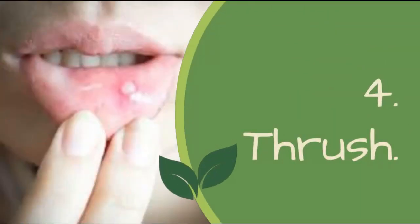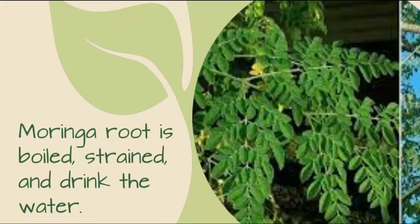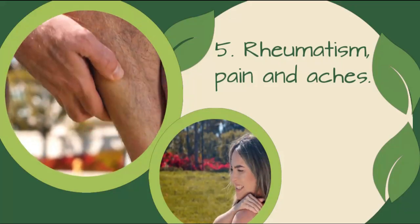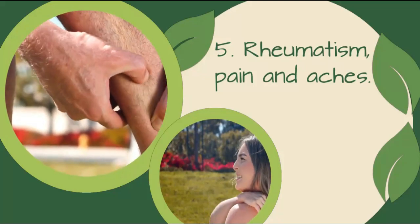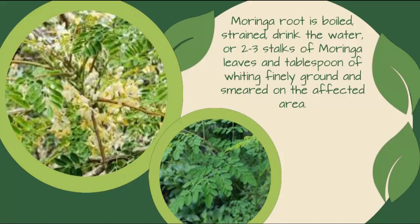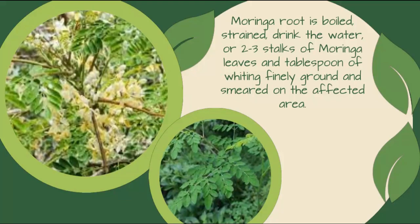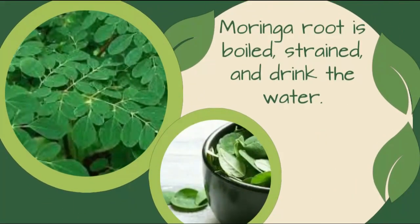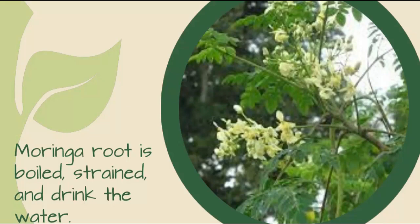4. Thrush: Moringa root is boiled, strained, and drink the water. Or 2–3 stalks of moringa leaves finely ground and smeared on the affected area. 6. Hysteria: Moringa root is boiled, strained, and drink the water. 7. Epilepsy: Moringa root is boiled, strained, and drink the water.